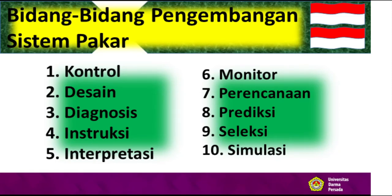Apa bidang-bidang pengembangan daripada sistem pakar? Beberapa bidang yang merupakan pengembangan daripada sistem pakar antara lain adalah: kontrol, desain, diagnosis, instruksi, interpretasi, monitor, perencanaan, prediksi, seleksi, dan simulasi. Itulah beberapa bidang yang merupakan area pengembangan atau wilayah pengembangan daripada sistem pakar.